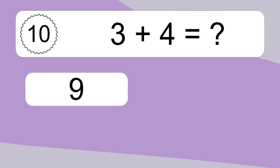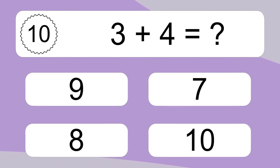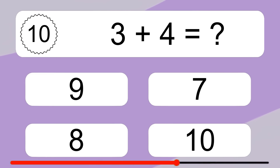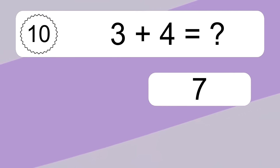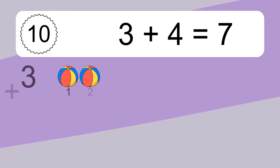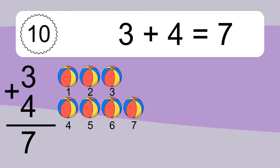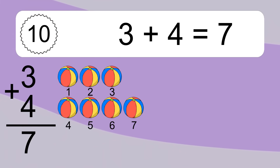3 plus 4 equals what? 3 plus 4 equals 7. Let's count it: 1, 2, 3, 4, 5, 6, 7.